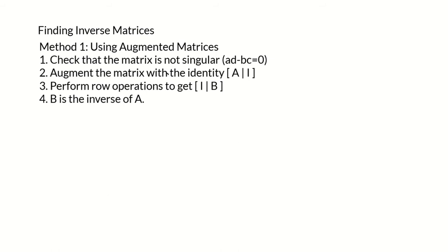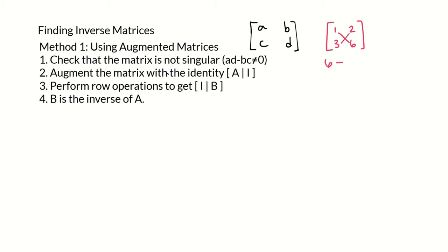First you want to check that the matrix is not singular. What that means is that AD minus BC is not zero, if the matrix looks like A, B, C, D. One example of a singular matrix would be the matrix 1, 2, 3, 6. Because when we calculate A times D — 1 times 6 which is 6 — minus B times C — 2 times 3 which is 6 — we get zero. So since AD minus BC is 0, that means this matrix is singular, which means the inverse does not exist for this matrix.